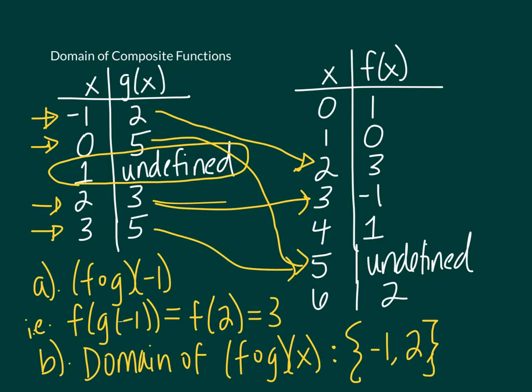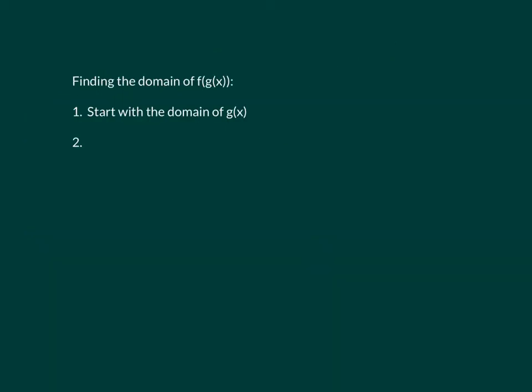This gives us a general strategy for how we can do this with algebraic functions. When finding the domain of a composite function, you're going to start with the domain of the inside function — in this case g — and then exclude values where the composite function is not defined.